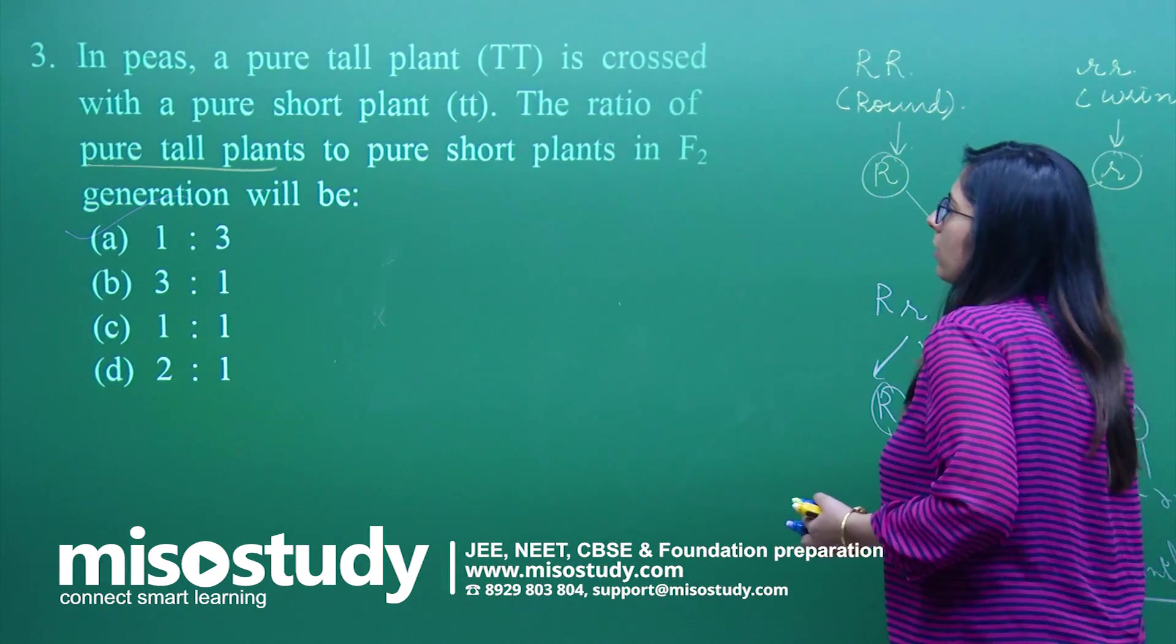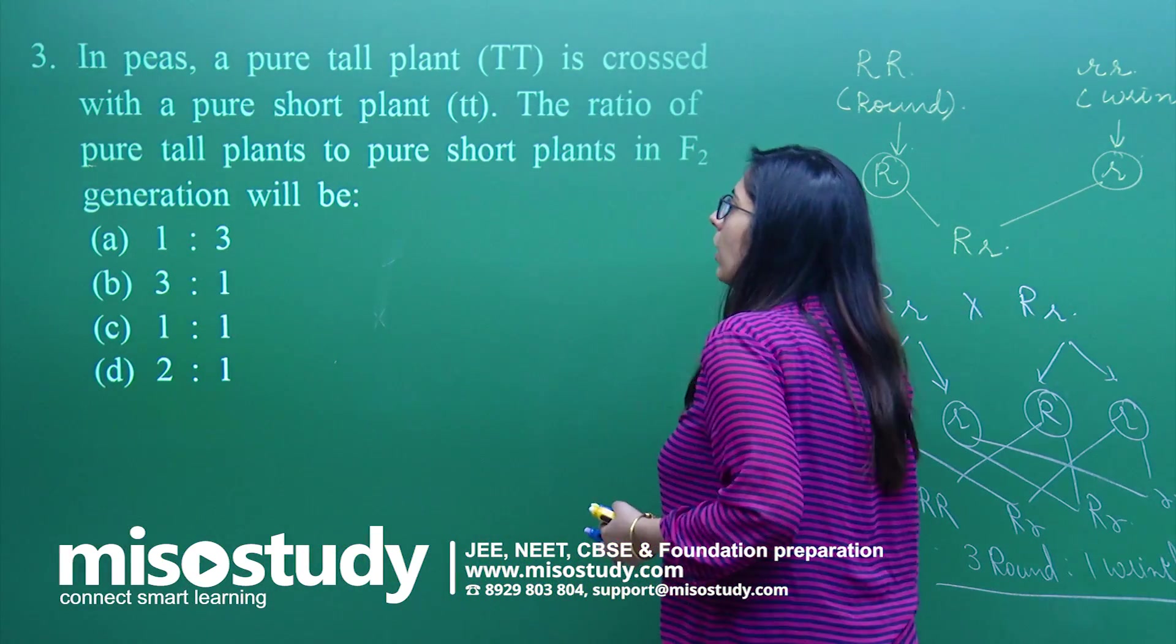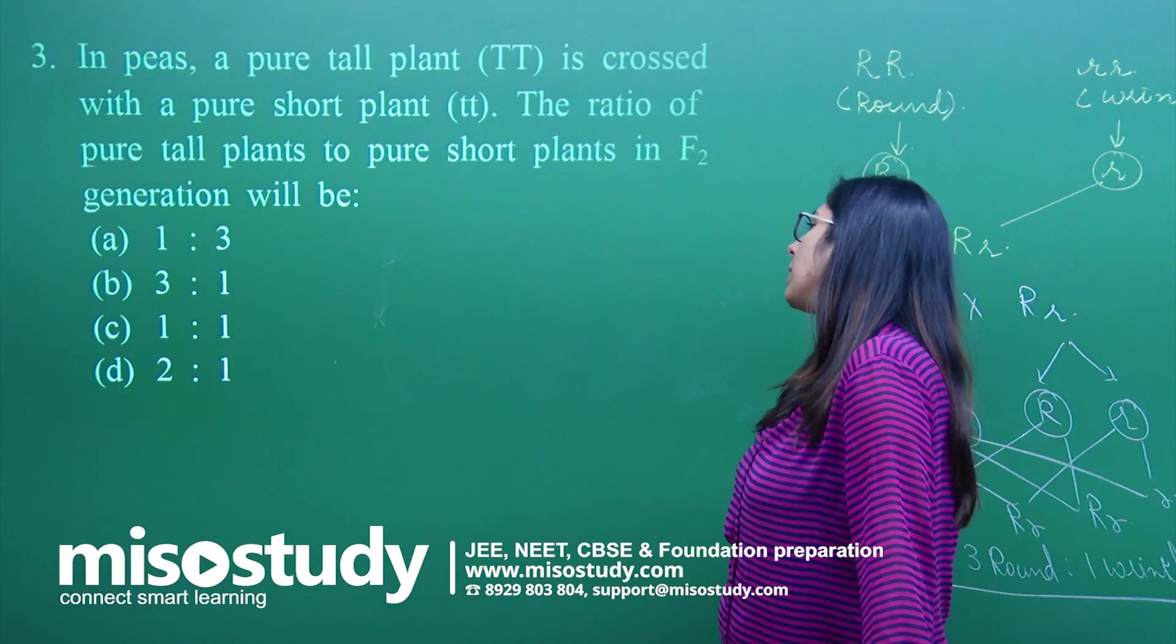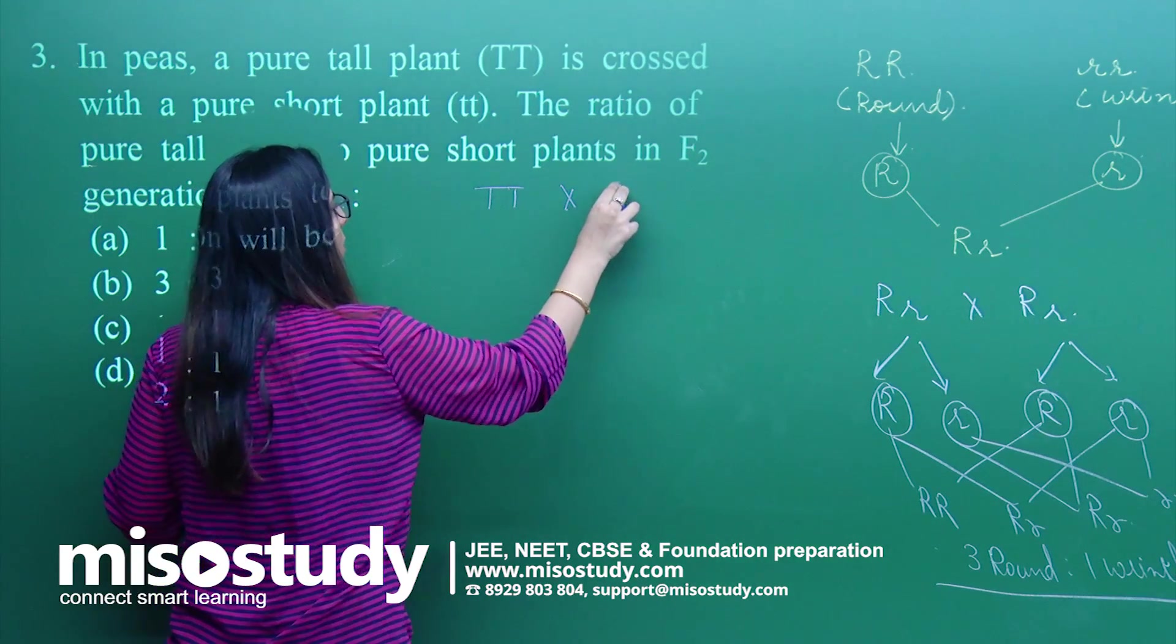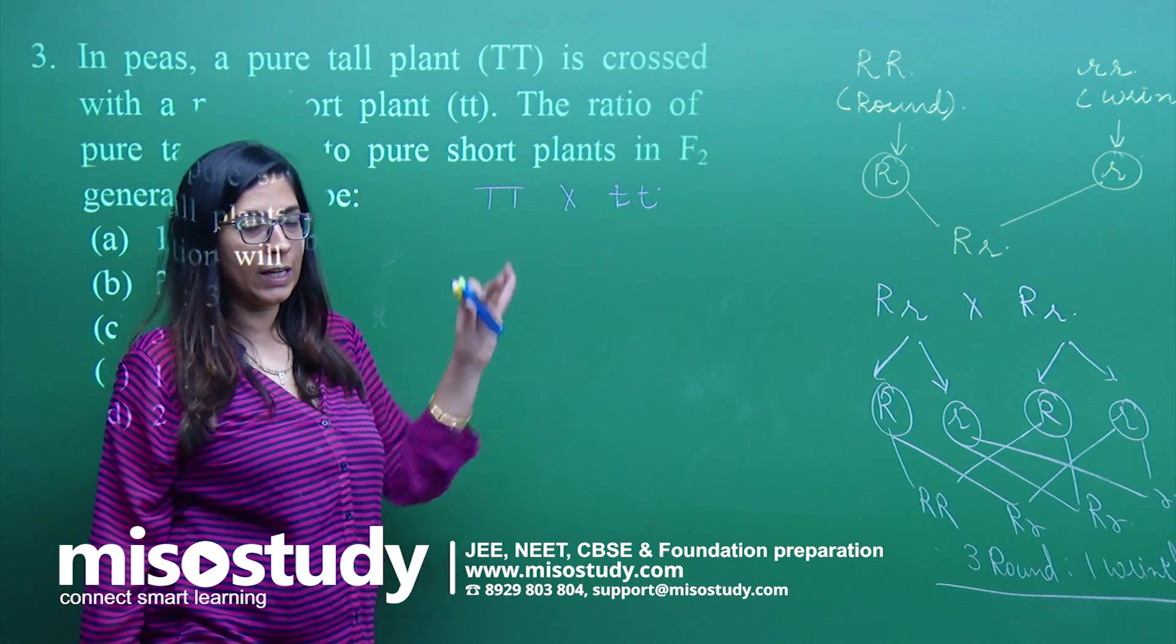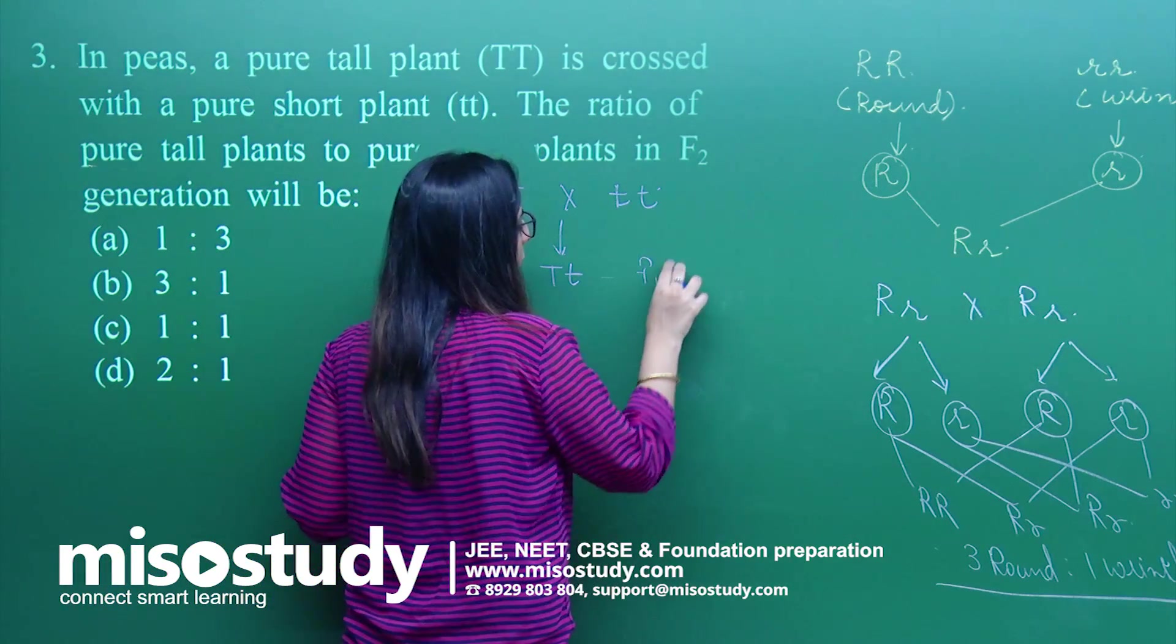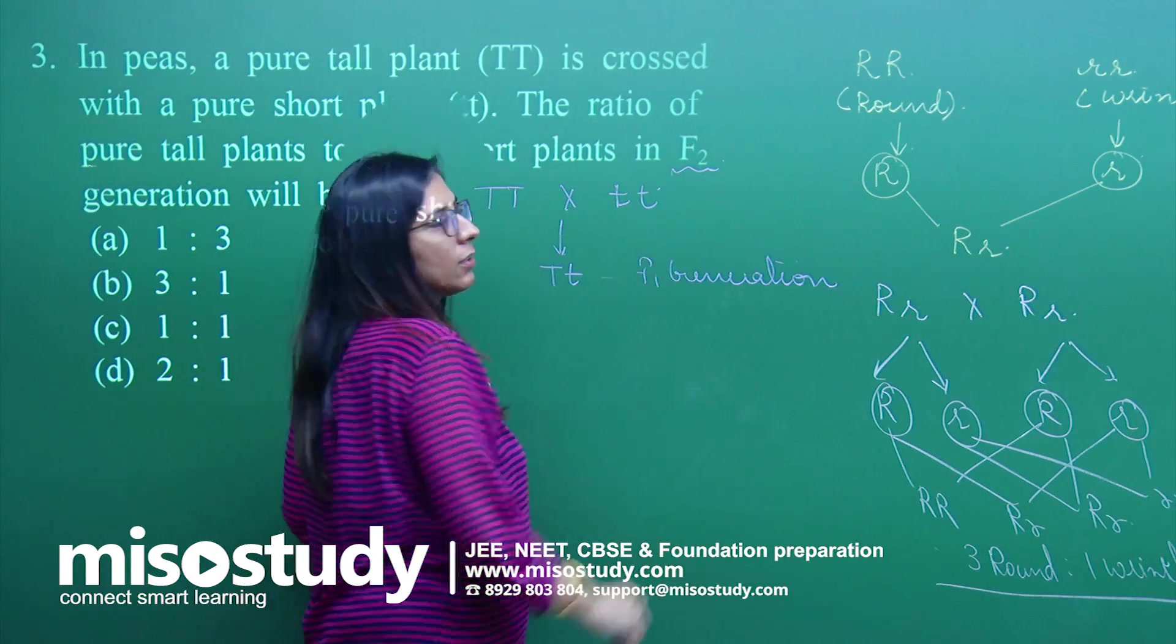Question number 3. In peas, a pure tall plant is crossed with a pure short plant. The ratio of pure tall to pure short plant in F2 generation will be. They are saying they have crossed capital T capital T with small t small t. I am not going into depth. Please do this question in detail by yourself. I am just making the F1 generation. The F1 generation will come out to be capital T small t.